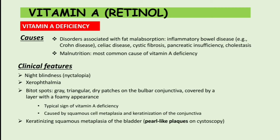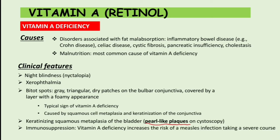Another clinical feature is keratinizing squamous metaplasia of the bladder, which on cystoscopy appears as white pill-like plaques. Vitamin A deficiency also causes immunosuppression, increasing the risk of severe measles infection — we'll revisit this in the therapeutic uses section. Finally, xerosis cutis — dryness of the skin, possibly with scaling.